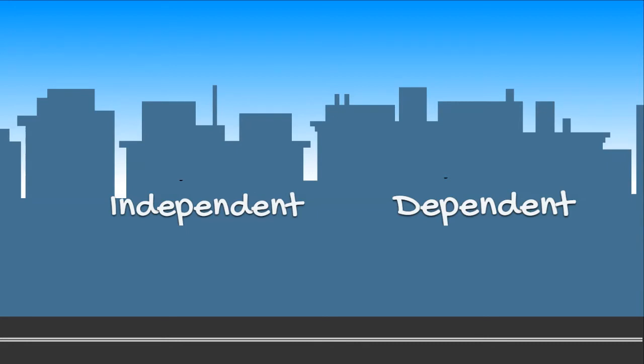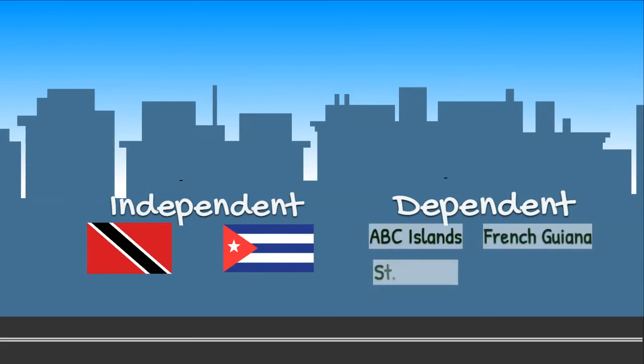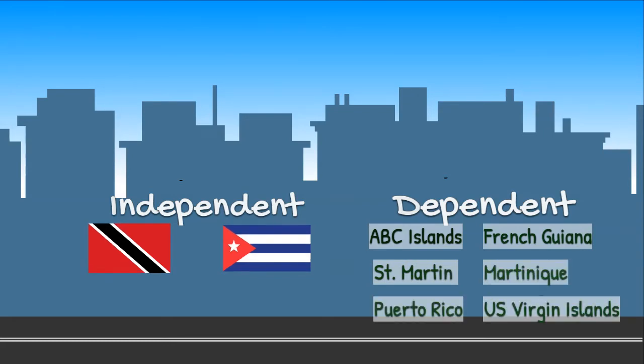Examples of independent states are Trinidad and Cuba. Dependent states' examples are the ABC Islands, French Guiana, St. Martin, Martinique, Puerto Rico, and the U.S. Virgin Islands.